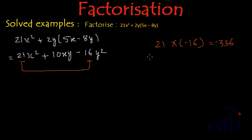So 7 times 3 is 21, so 21 can be written as 7 multiplied by 3, and this 16 can be written as 2 multiplied by 2, 4, 4 to 8, 8 to 16.